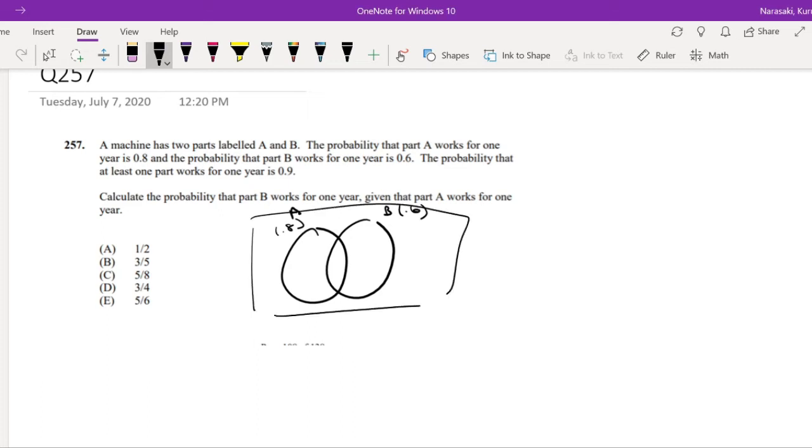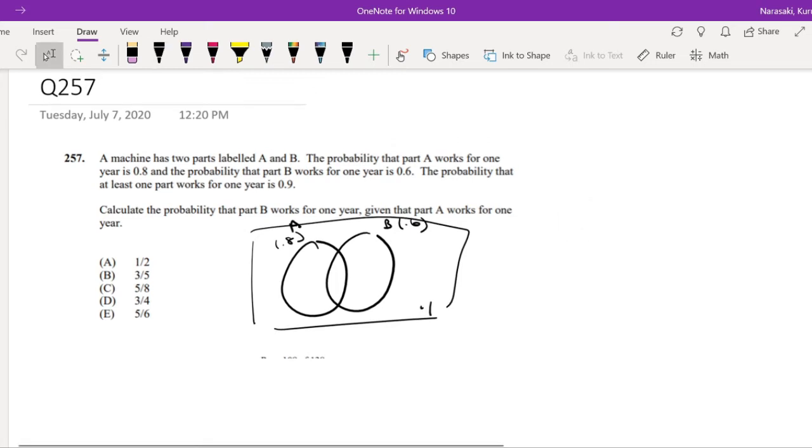Calculate the probability that B works for one year, given that A works for one year. So this is saying, calculate the probability that B works for one year, given A works for one year. Okay, so the numerator is B and A over the probability of A.